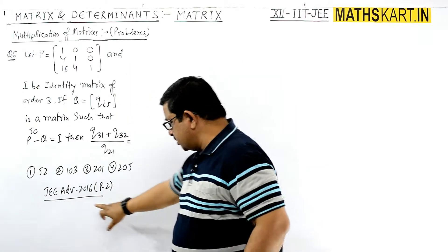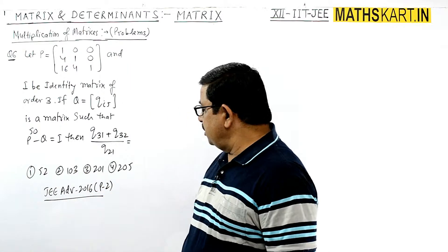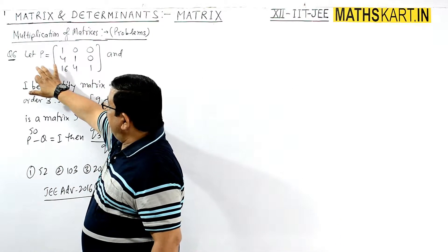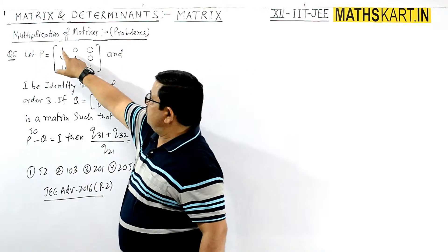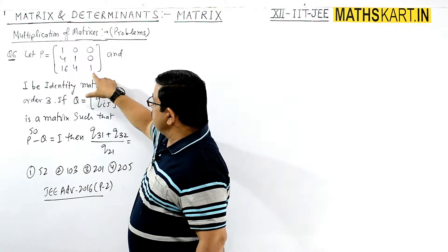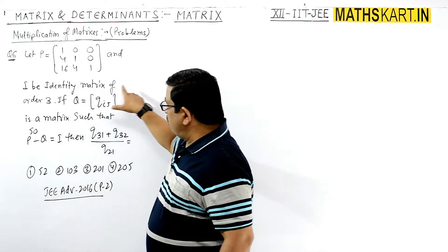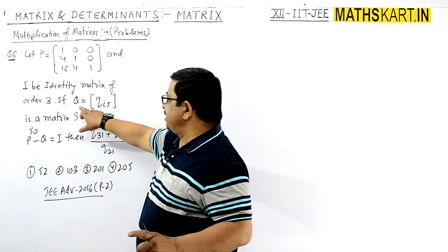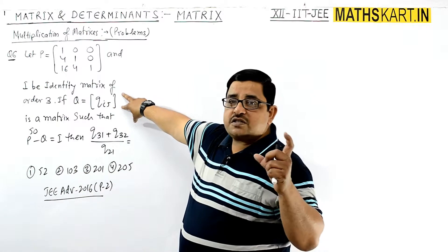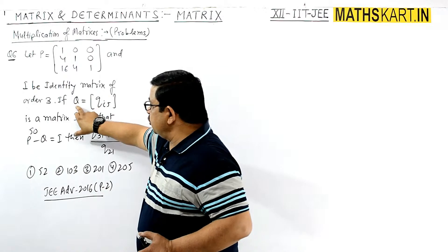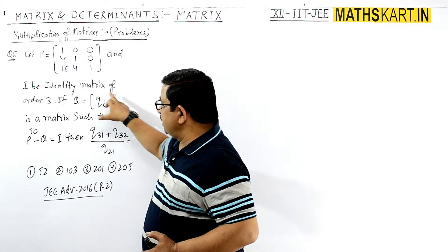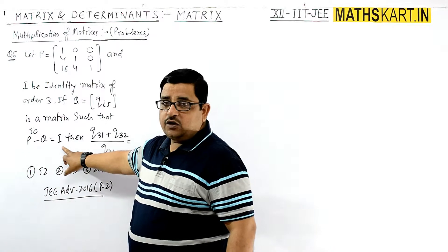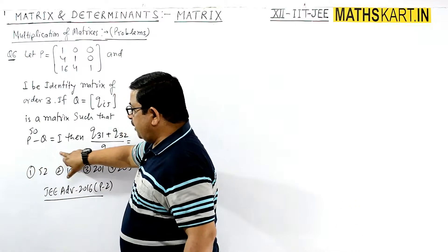This particular question is from JEE Advanced 2016 Paper 2 - the last question in multiplication of matrices. Let P be the matrix [1 0 0 / 4 1 0 / 16 4 0] and I be the identity matrix of order 3. Q is defined as the matrix QIJ and it is given that P to the power 50 minus Q equals I.